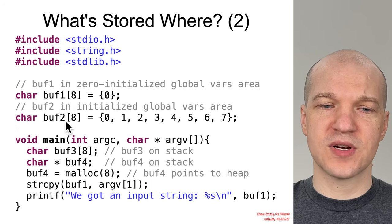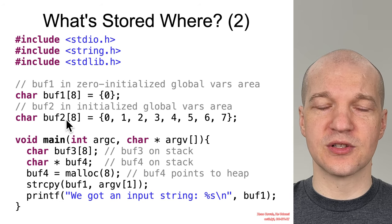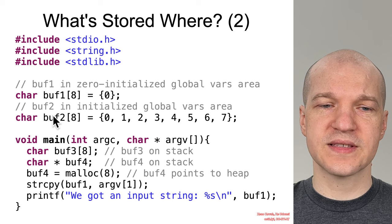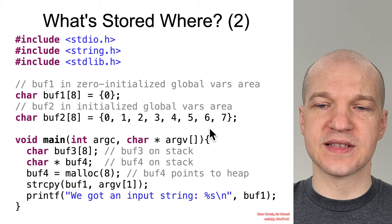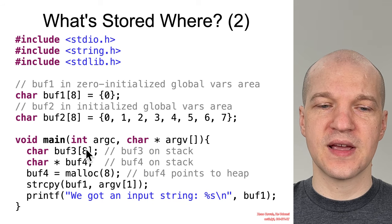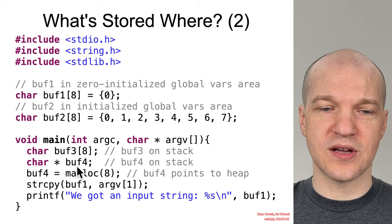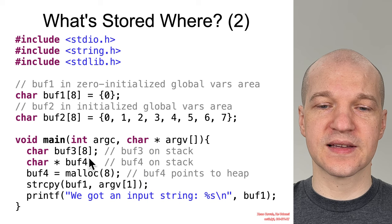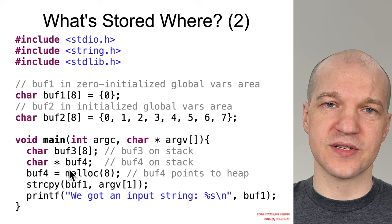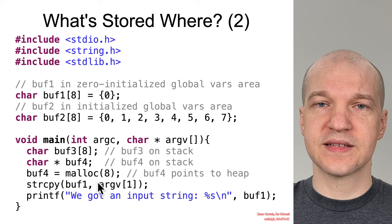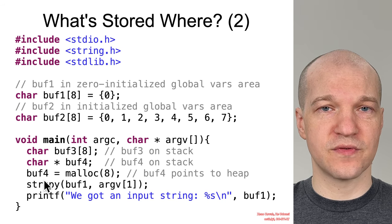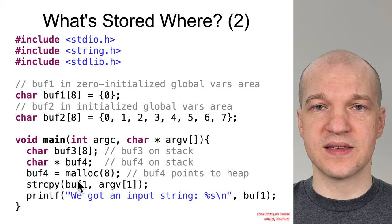Buff1 and buff2 are globals — they're not going to be on the stack. They go into special global areas: zero-initialized global variables like buff1 go into one area, and non-zero initialized globals like buff2, set to 0x01234567, go into a different memory region. Buff3 and buff4 are what we care about — these are local variables stored on the stack. Buff3 is eight bytes on the stack; buff4 is a pointer on the stack whose width is 32 or 64 bits depending on the system. Malloc allocates eight bytes on the heap, returns a pointer, and stores it into buff4 on the stack. So buff4 is on the stack; the data it points to is on the heap.